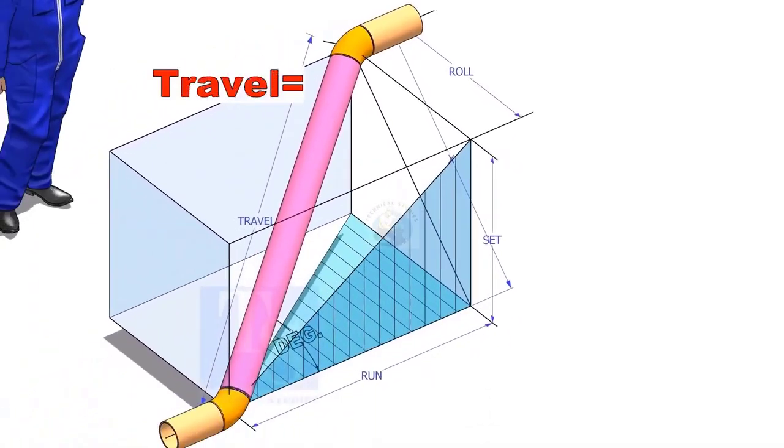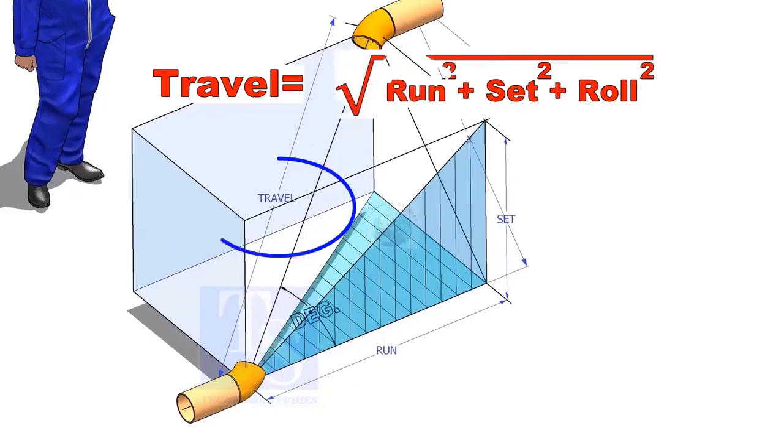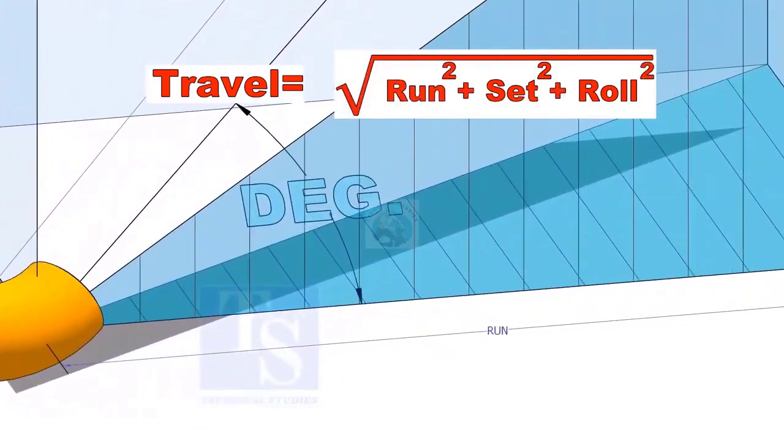The formula to calculate the travel length is root of the sum of the run, set and roll.